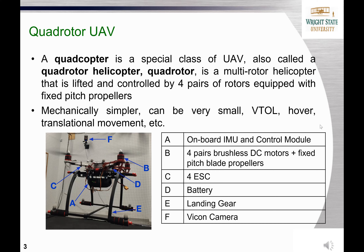This picture shows a UAV that is built by students in the lab. On board the UAV, we have an IMU, a control module, the ESC, and so on. Denoted as F in the picture is a motion capture system using Vicon cameras. The system is able to provide high accuracy position and attitude measurements of the UAV for control purposes.